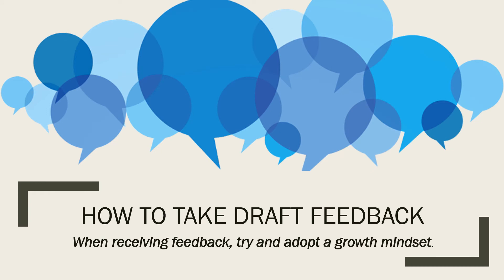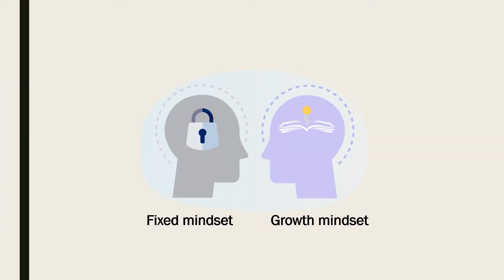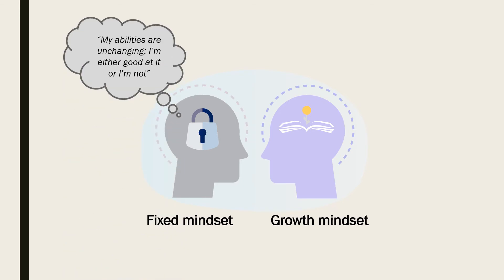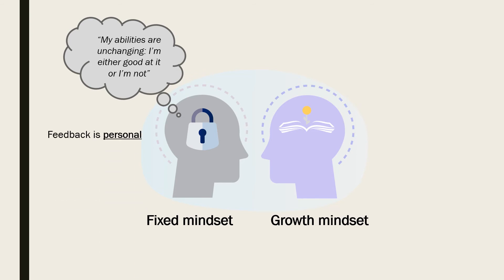So when you are receiving teacher feedback, try and adopt a growth mindset rather than a fixed mindset. Having a fixed mindset is holding the belief that intelligence is static, and therefore an individual with a fixed mindset believes that their abilities are unchanging — they are either good at something, or they're not. This leads to that individual seeing effort as fruitless and giving up easily when faced with obstacles. Feedback is taken as personal criticism, and the success of others is seen as a threat.